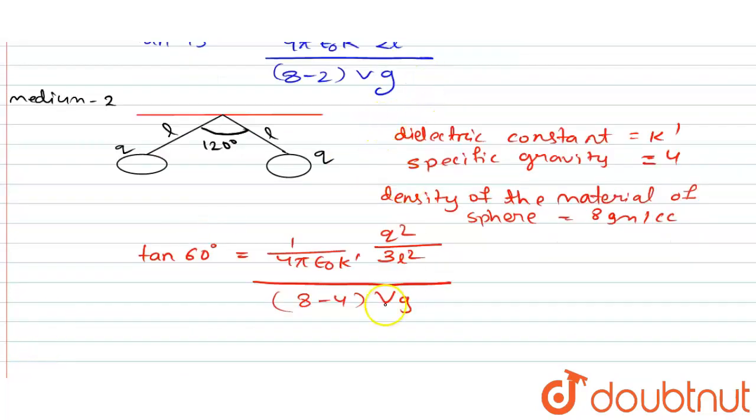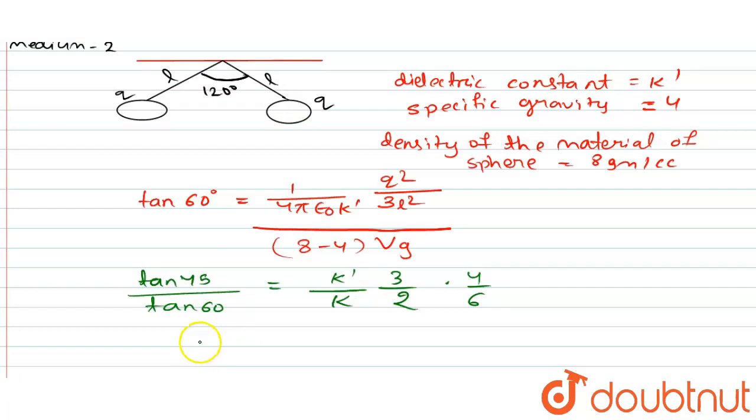On dividing these two equations we get tan 45° divided by tan 60° is equal to (K'/K)(3/2)(2 into 4/6 will remain). Putting the value we get 1/√3 = K'/K.